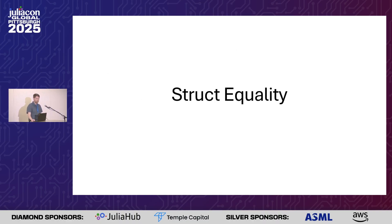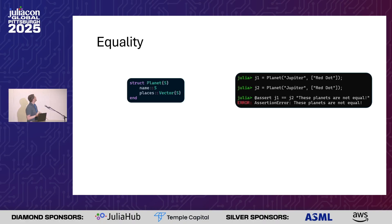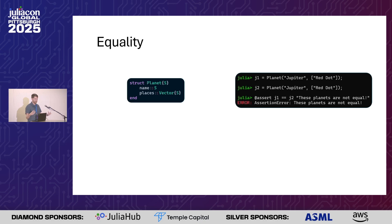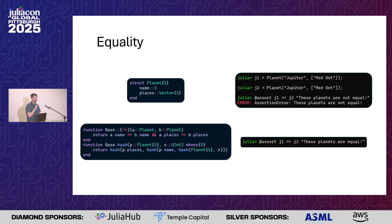The first thing I want to go over is how we think about struct equality. If we define a simple struct like Planet with a string name and a vector of places, and we make two different instances with the same name and the same place, the default implementation of equality will say these are not equal structs because of the fallback for how we do equality between structs. What we need to do is a manual implementation of field-wise equality and add all of these together.